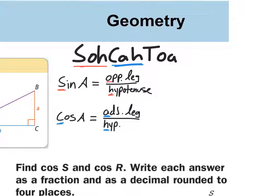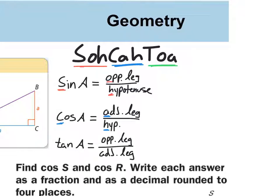The last one, the TOA part, is for tangent. We always say the word 'tangent' but abbreviate it as T-A-N. So the tangent of angle A equals the opposite leg over the adjacent leg — tangent equals opposite over adjacent.